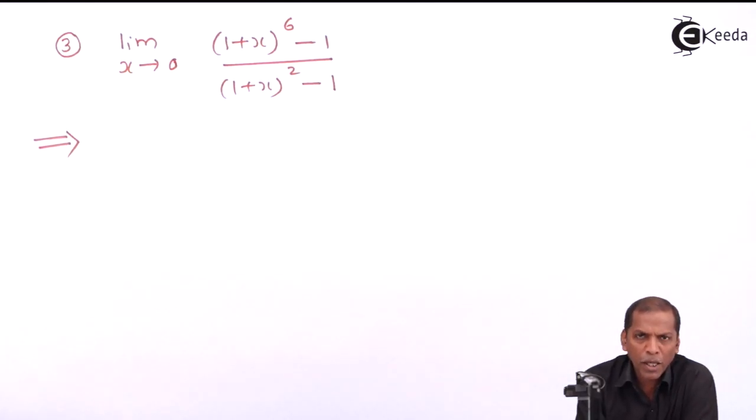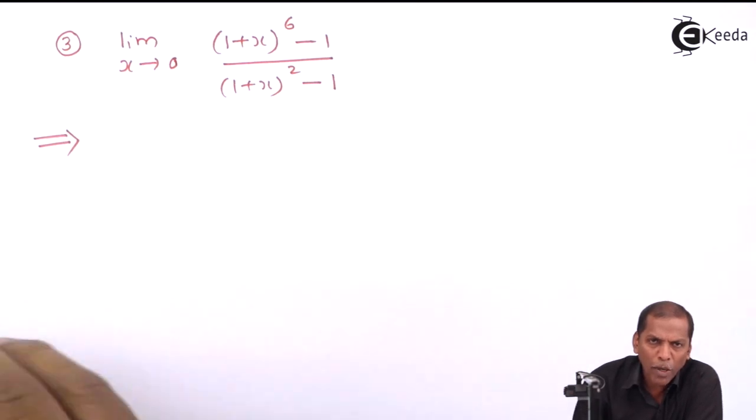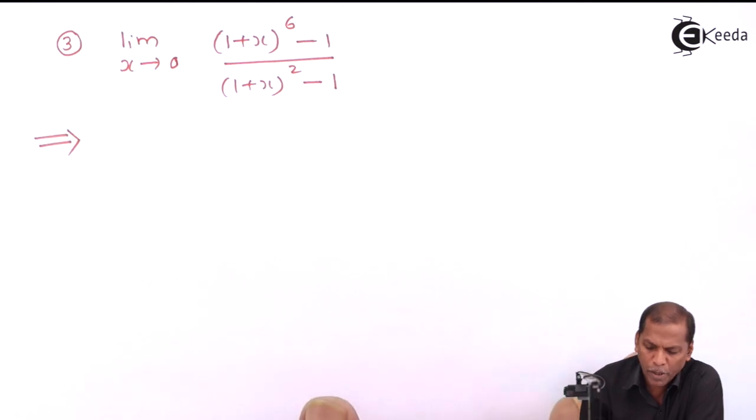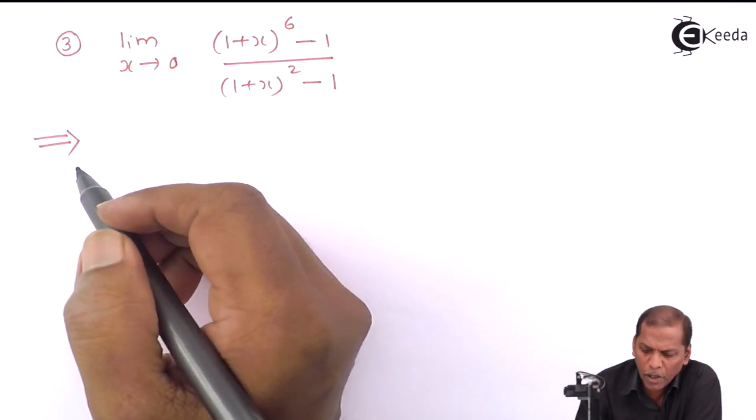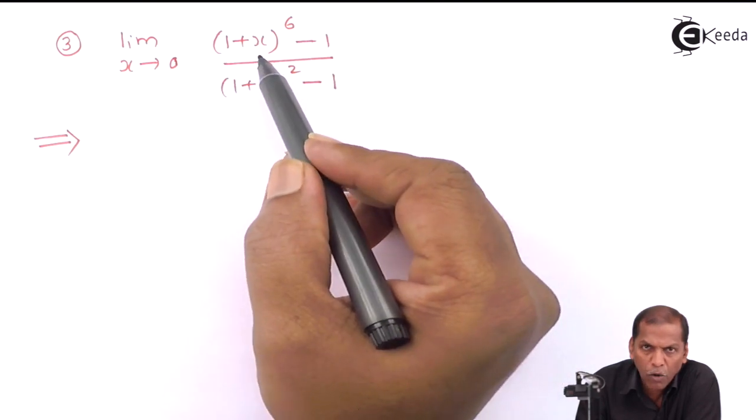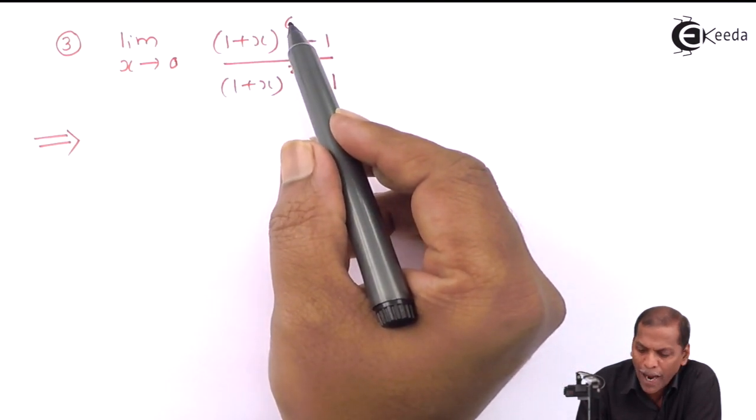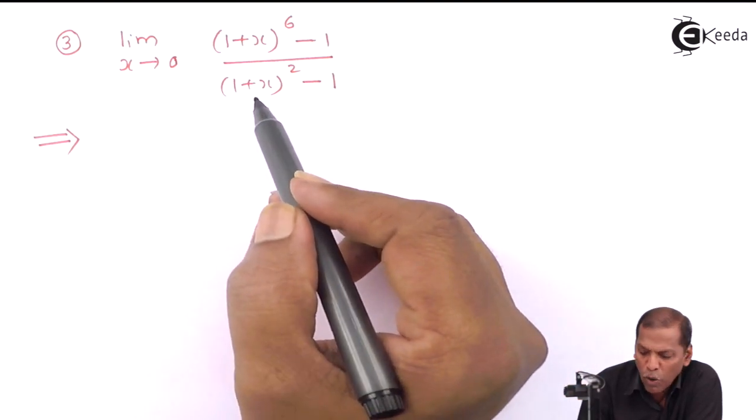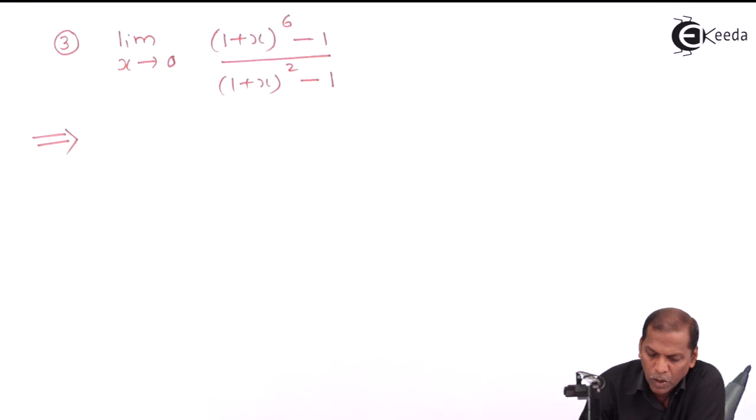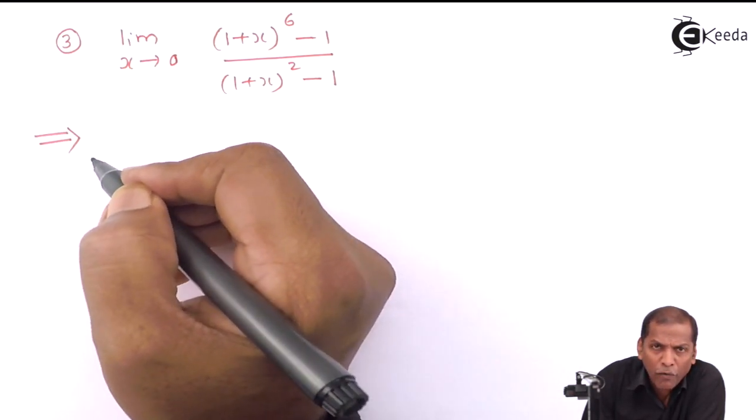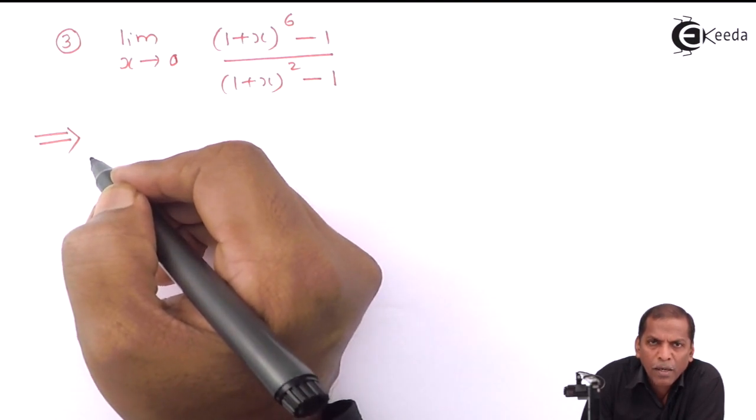Hello friends, now we see problem number 3, which is also based on the chapter limits. The problem is: limit as x tends to 0 of (1+x)^6 - 1 over (1+x)^2 - 1. Now let's see the solution. First of all, we denote this limit as L.